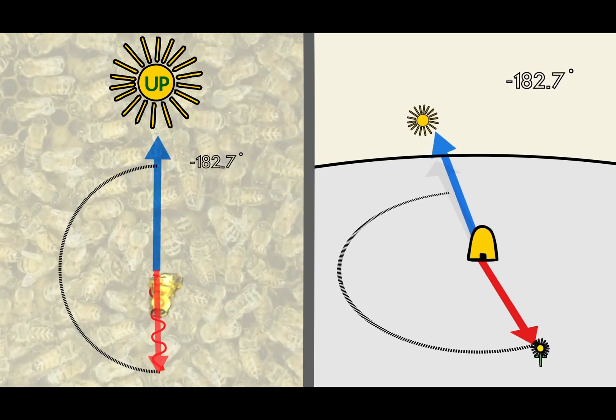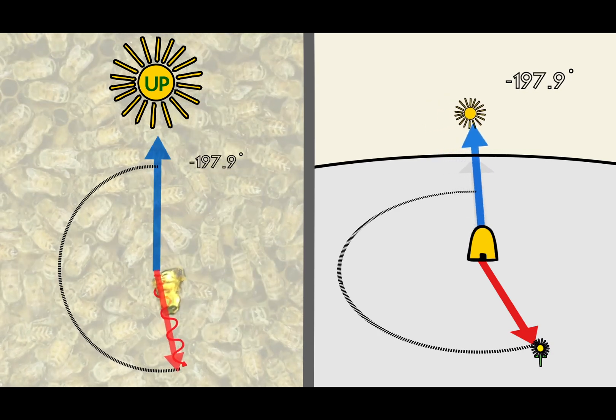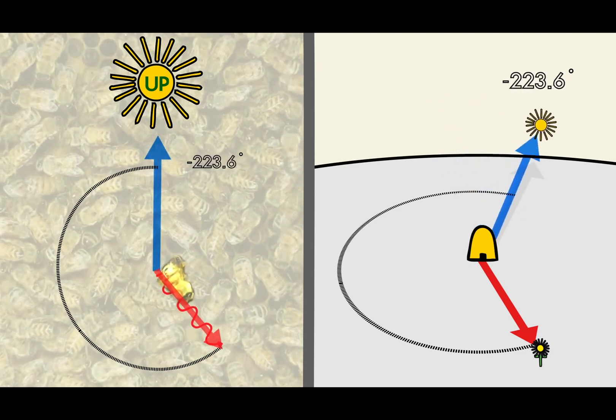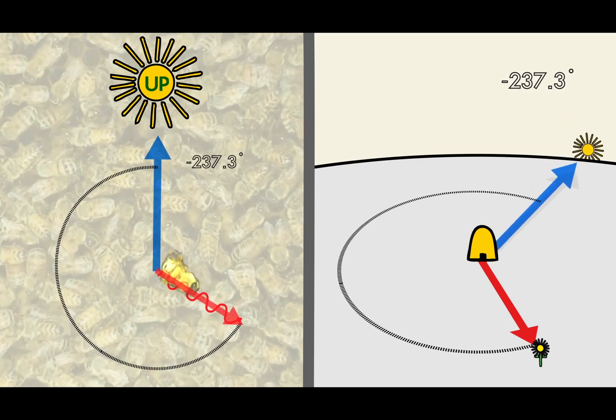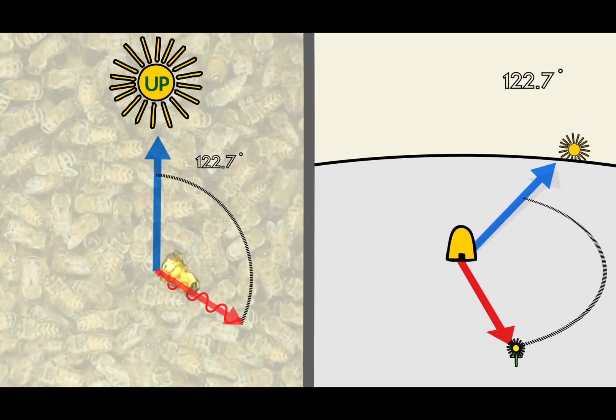As the day goes by, a bee will even use its internal clock to adjust for the movement of the sun in the sky. This lets fellow workers always know the correct direction to travel in order to find food.